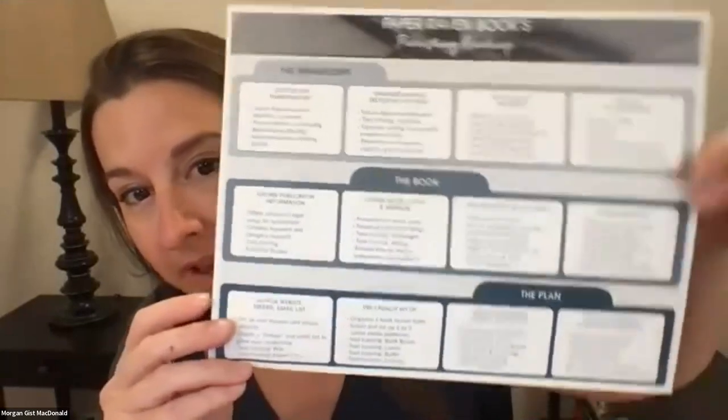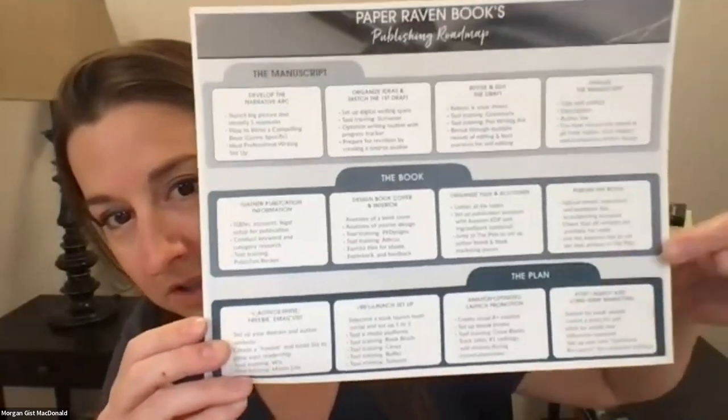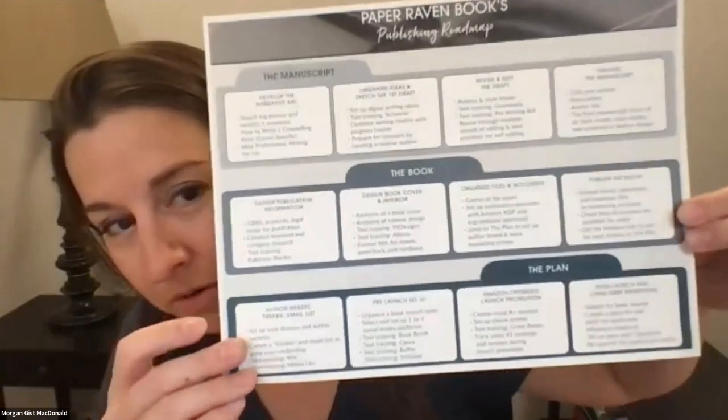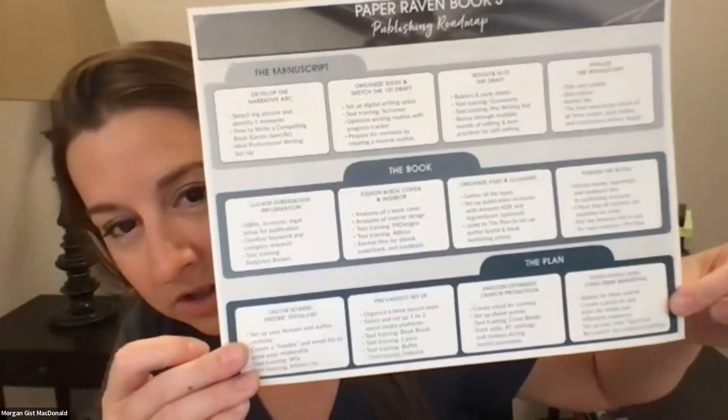We are talking about the foundations of an author platform. We're going through our roadmap — last week we talked about the manuscript, yesterday we dove into book production, but we're going to take a slight detour to talk about the plan, the marketing plan, getting our author foundation set before we actually publish the book.